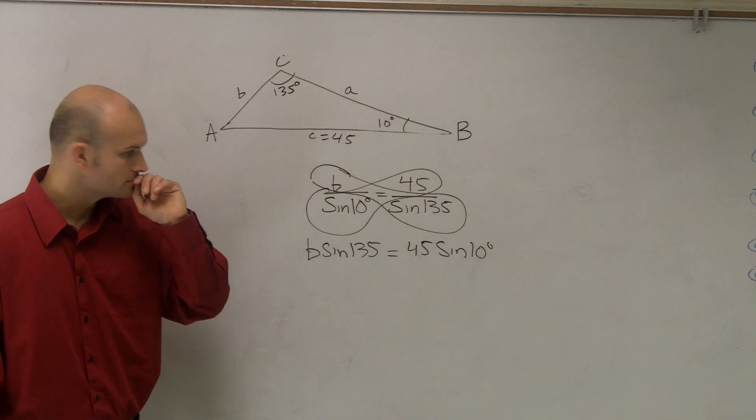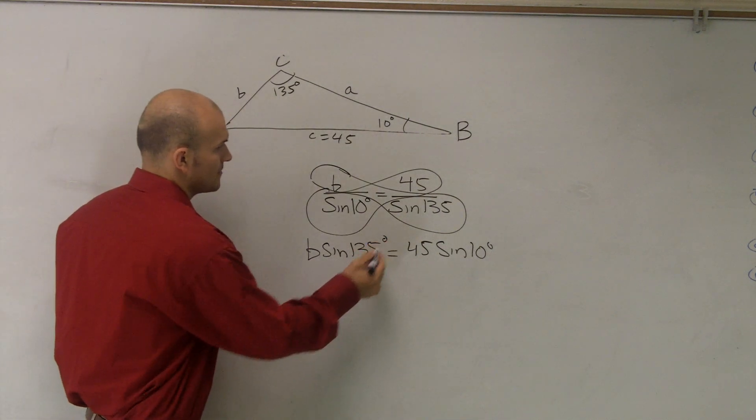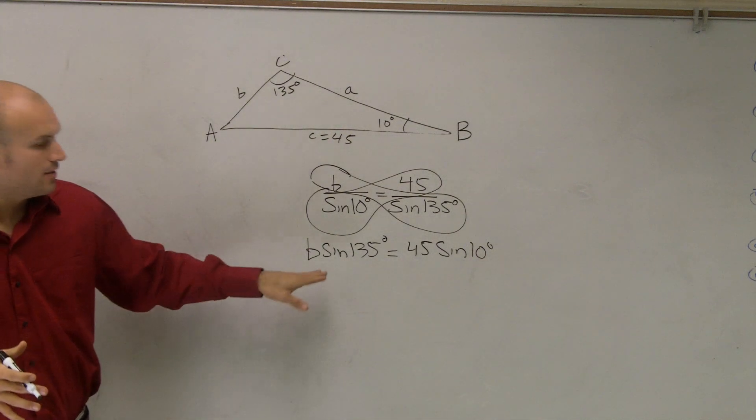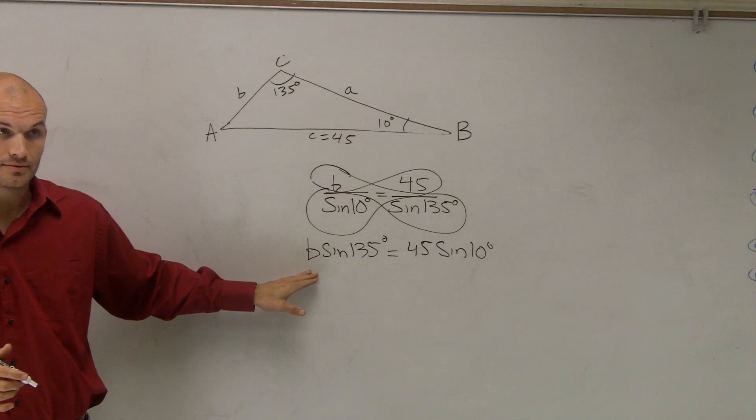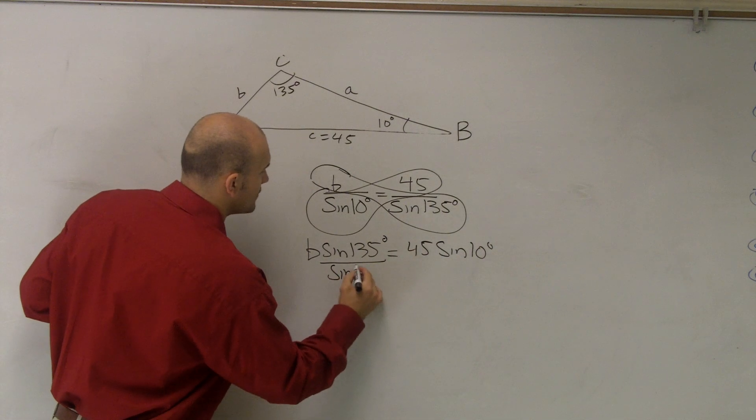Then 135 degrees is more. So now, to solve for my angle B, or solve for my side B, I'm going to divide by sine of 135.